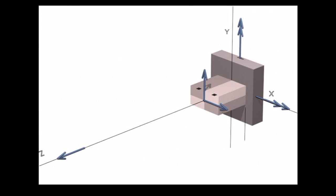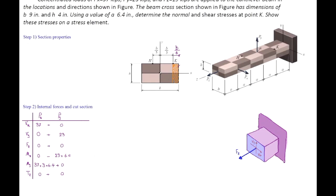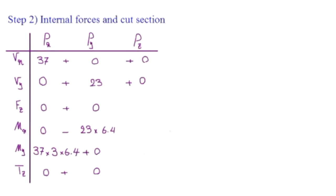Now the very last force, Pz. When I move that to the cut section, it becomes an axial force. What would be the moment caused by that? Nothing, because a moment is not developed when you move a force along its axis. So Pz doesn't cause any shear, but it causes an axial force of 19 kips, and there is no moment or torque caused by that.